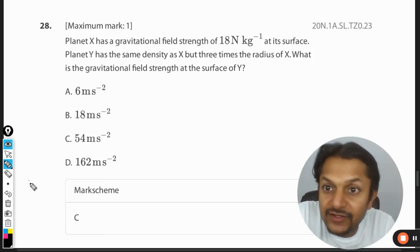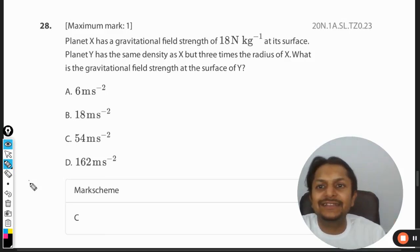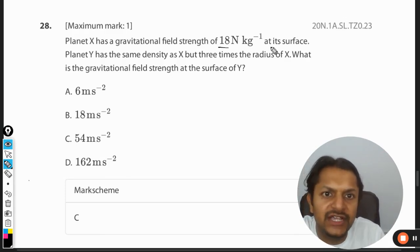Okay, dear students, let's see what is there in this question. Planet X has a gravitational field strength of 18 newton per kg at its surface, which means the acceleration due to gravity is 18 meter per second squared.